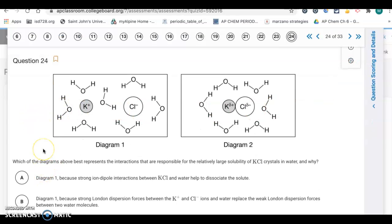Which of the diagrams above best represents the interactions responsible for the relatively large solubility of KCl crystals in water? The concept behind this: how do ionic solids dissolve? The ions will separate, then they're surrounded by water molecules with ion-dipole forces between them. It's the ion connected to the dipole of the water molecules. It's always positive ions attracted to the oxygen end of the water molecule, positive to negative, and negative ions attracted to the hydrogen end, negative to positive.